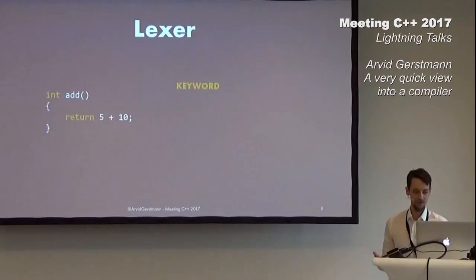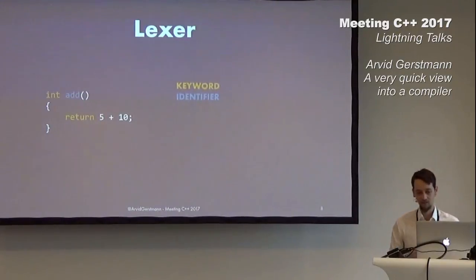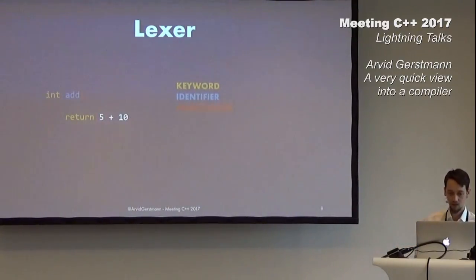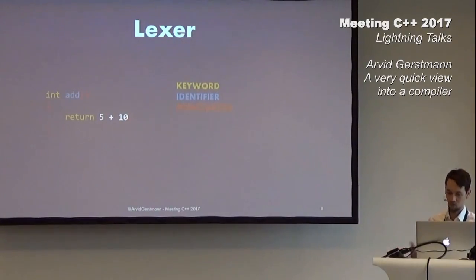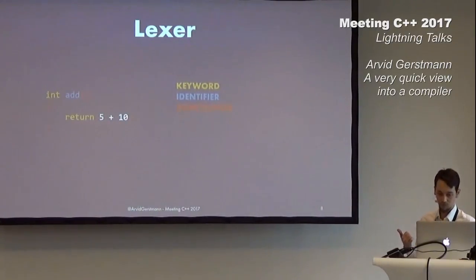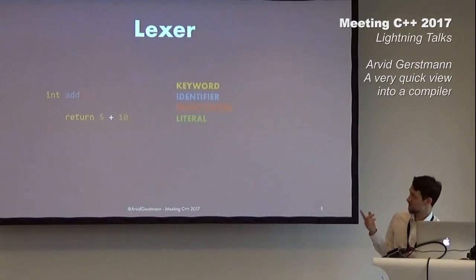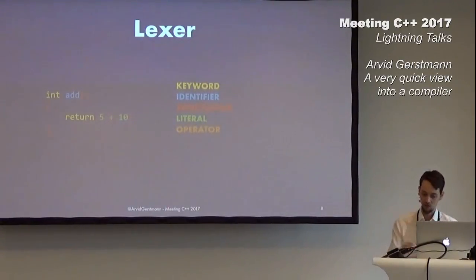First we have the two keywords, which are int and return, represented by the color yellow. Next we have the identifier: add. Following that, we have so-called punctuators — that is either whitespace or parentheses, braces, semicolons, etc., represented in red. Next we have our numbers in the source code, 5 and 10 — those are integer literals. And last but not least, we have an operator, the plus operator, represented in orange.